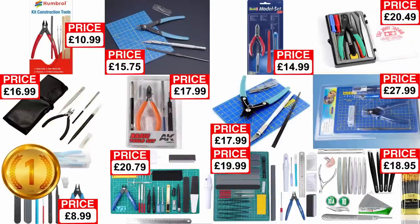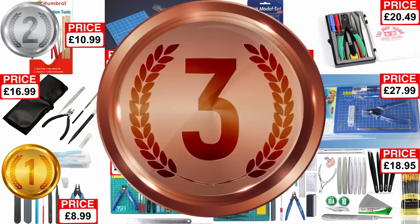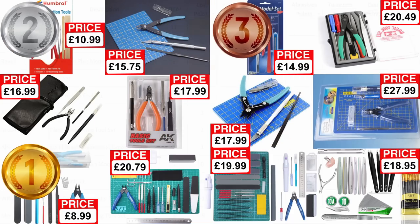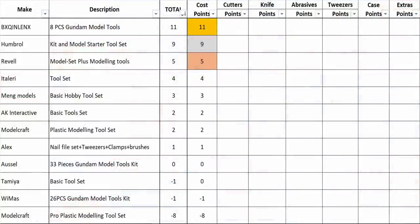That means that the Small Gundam set claims first, Humbrol second, and Revell third. In terms of points, I'm giving each set the difference between its cost and our £20 budget, meaning that some of the sets start off actually losing points, the Model Craft Pro set starting 8 points in debt.